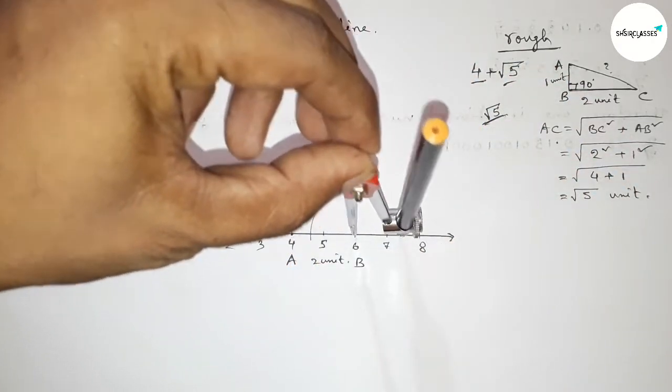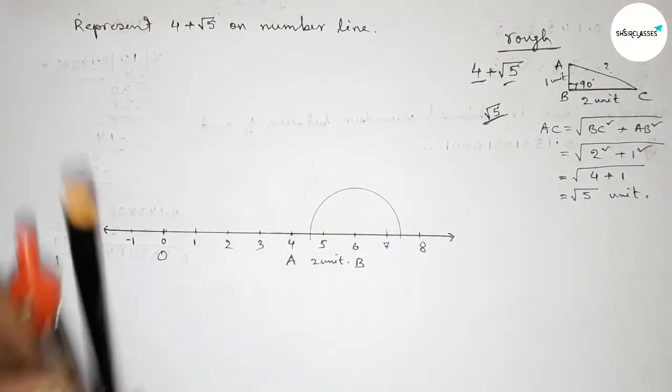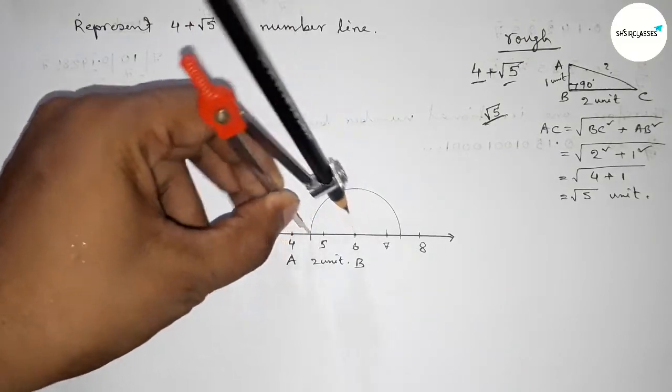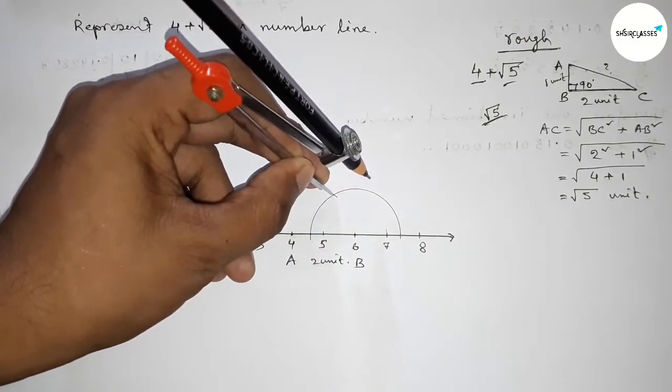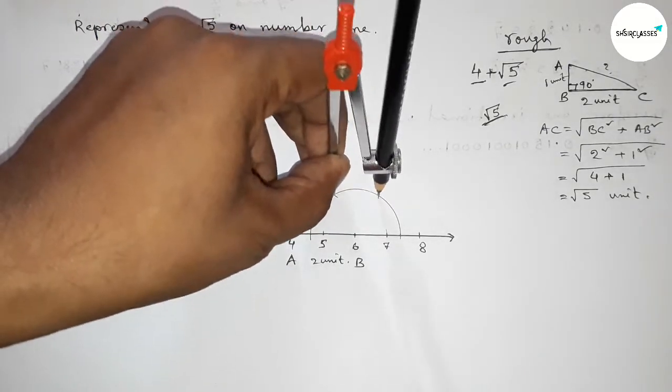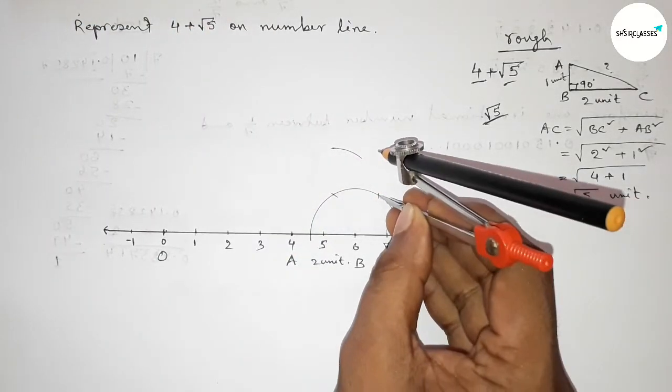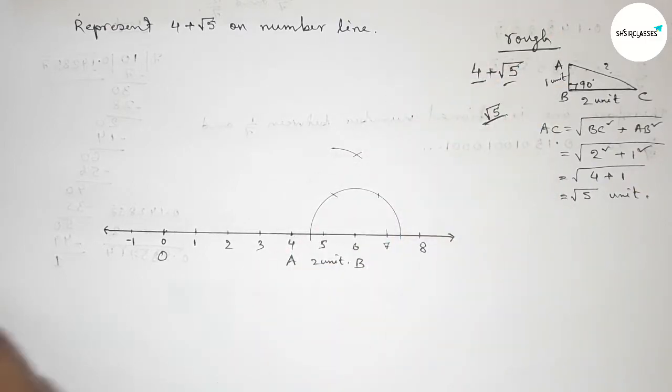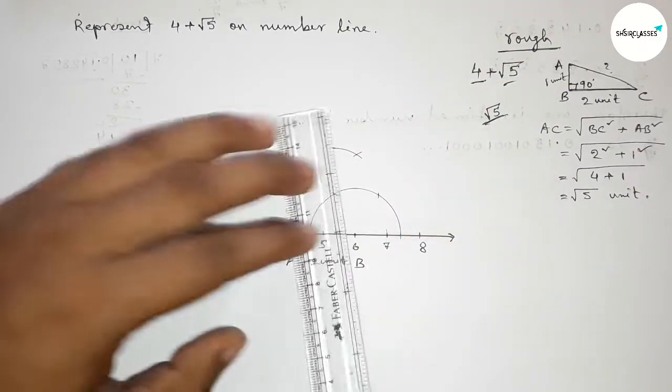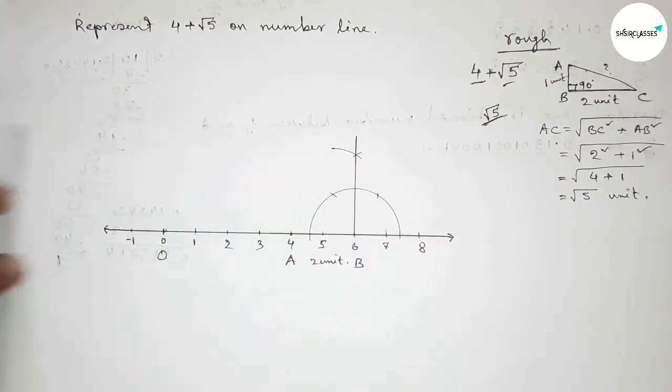So taking any length and drawing an arc by this way, and putting the compass here taking same length and cut here, and putting the compass here and cut here, and drawing an arc here again with same length, and putting the compass here and cut here. Now first joining this line to get here a 90 degree angle. So we got a 90 degree angle.